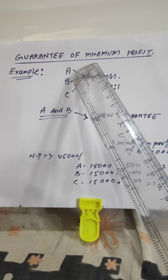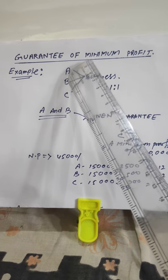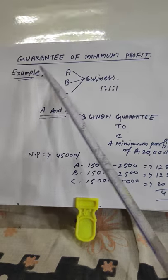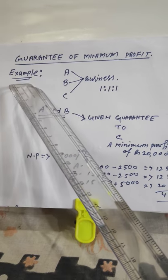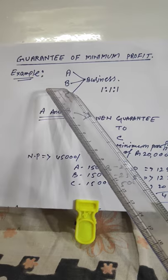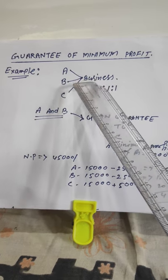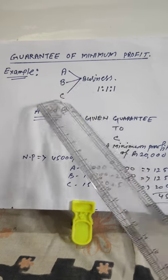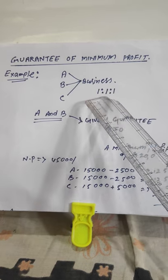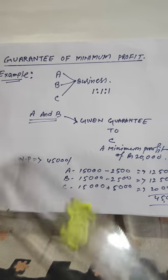I am explaining the concept with an example, then I will come to the exercise and questions. Suppose three partners are there in a partnership firm: A, B, C. These three are partners in a firm and their profit sharing ratio is 1:1:1, meaning they will share profit equally.